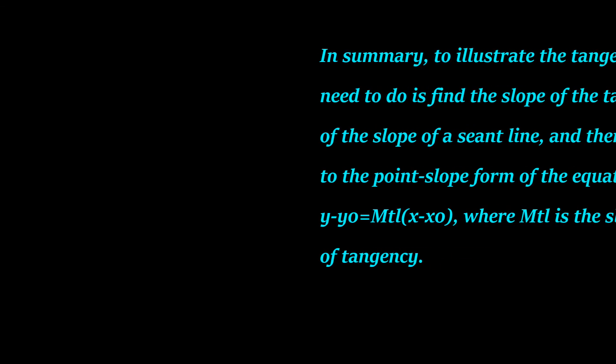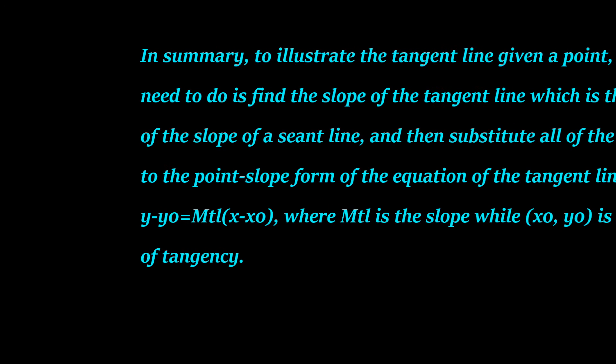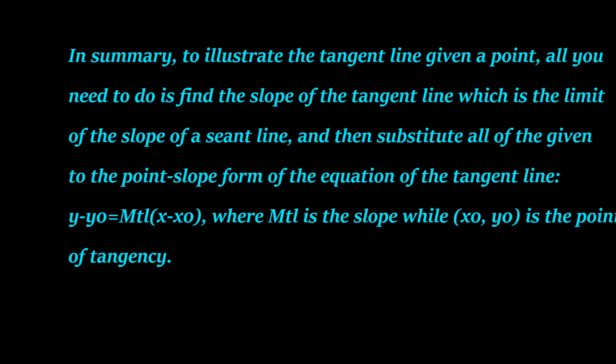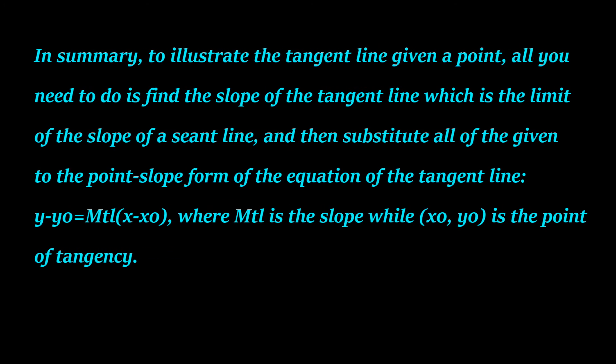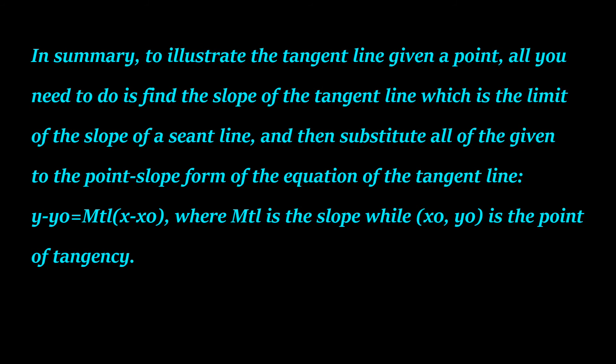In summary, to illustrate the tangent line given a point, all you need to do is to find the slope of the tangent line, which is the limit of the slope of a secant line. Then substitute all of the given into the point-slope form of the equation of the tangent line: Y minus Y-sub-0 equals M-sub-TL multiplied by the difference of x and x-sub-0, where M-sub-TL is the slope, while x-sub-0 and Y-sub-0 is the point of tangency.